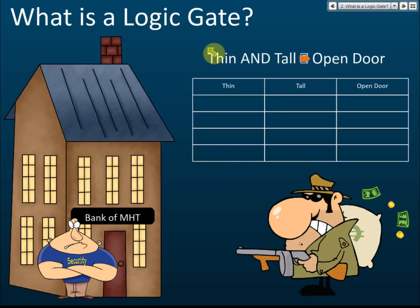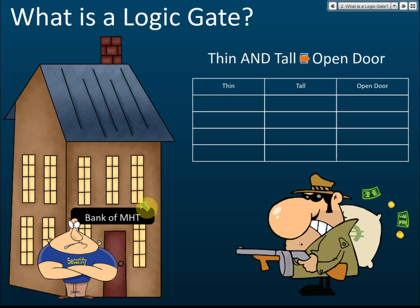What is a logic gate and why do we need one? Let's look at this example. There's a bank that has been robbed frequently. They found that the robber is usually fat and short — the same group of robbers every time. When the robber comes, he wears a mask, so we cannot recognize his face. But we know the robber is short and fat.